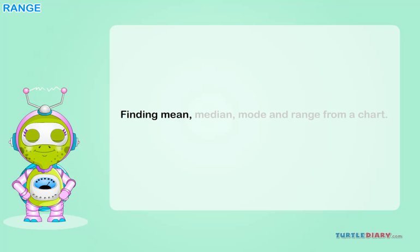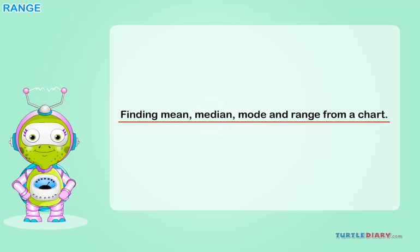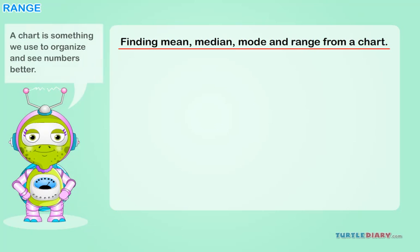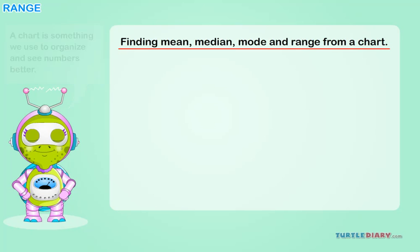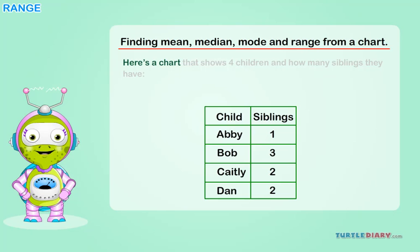Finding mean, median, mode, and range from a chart. A chart is something we use to organize and see numbers better. Here's a chart that shows four children and how many siblings they have.